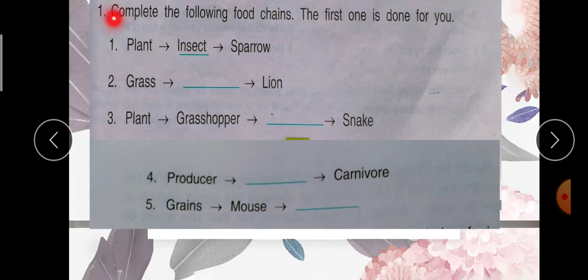Question 1 is, complete the following food chains. The first one is done for you. Ki niche jo hain kuch food chains di gayi hain, aapne inko complete karna hai aur jo first food chain hai, wo complete hai. Aapne beta jab lesson read kiya tha, to usmein padha tha ki what is food chain? To usi ke based aapne jo ye food chains hain, inko complete karna hai. Try to solve it.